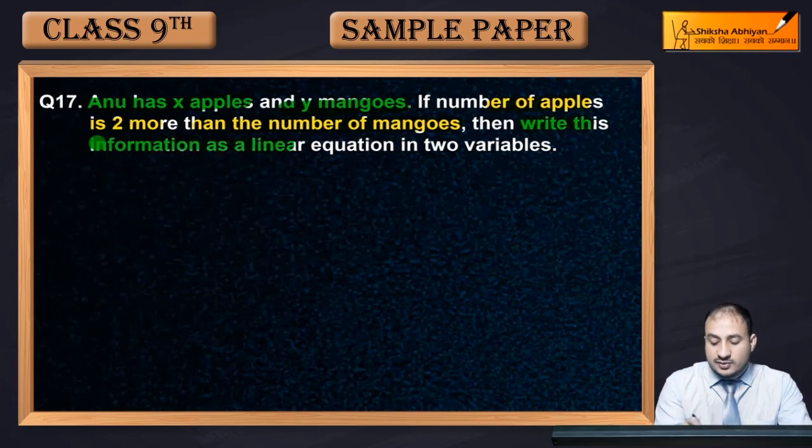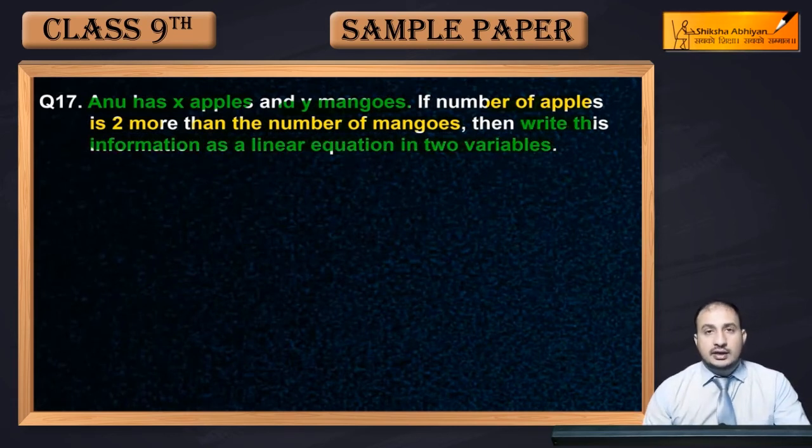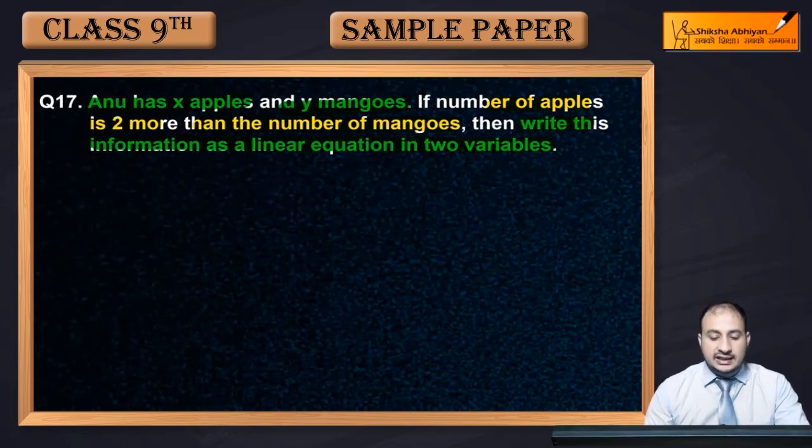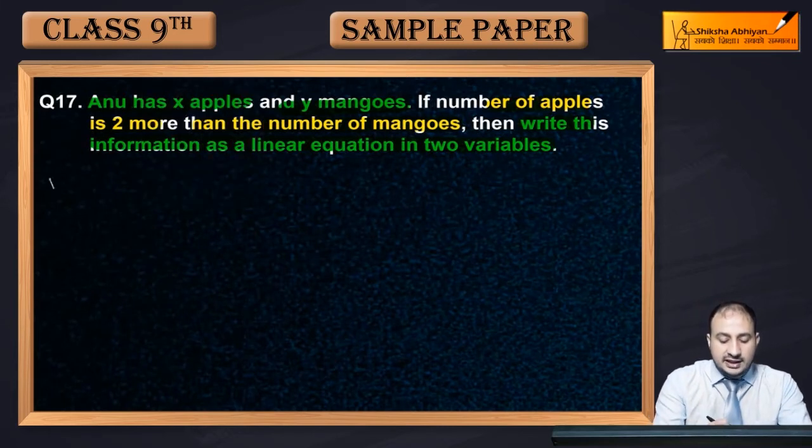Then write this information as a linear equation in two variables. We need to write the given information in the form of a linear equation in two variables. Let's see how we write this.